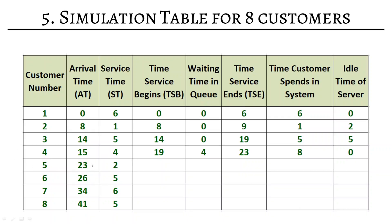Customer 5 arrives at minute 23 — service can begin immediately at 23 since the cashier just finished. Waiting time is 0. Service lasts 2 minutes, ending at 25. Time in system is 2 minutes. Idle time is 0. Customer 6 arrives at minute 26. The cashier was free at 25, so service begins at 26. Waiting time is 0. Service lasts 5 minutes, ending at 31. Time in system is 5 minutes. The server was idle between 25 and 26, so idle time is 1 minute.